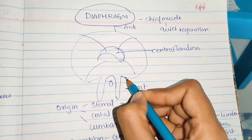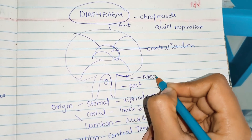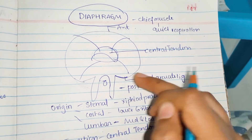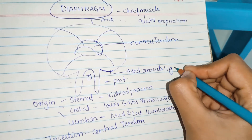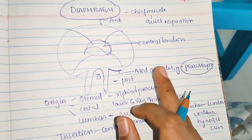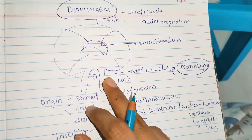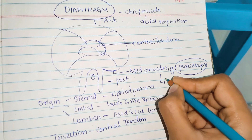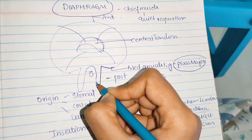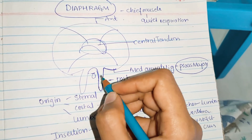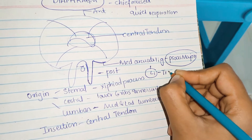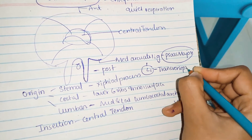Now let us discuss the arcuate ligaments. The medial arcuate ligament is a tendinous arch covering the upper part of psoas major muscle. It is attached to the body of L1 vertebra, is continuous with the lateral margin of the crus of the diaphragm, and laterally is attached to the transverse process of L1.